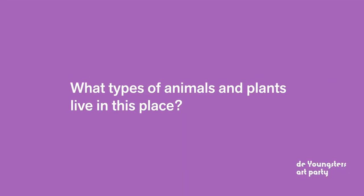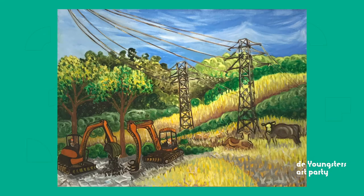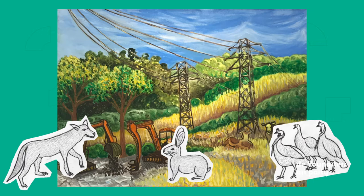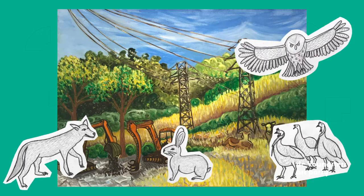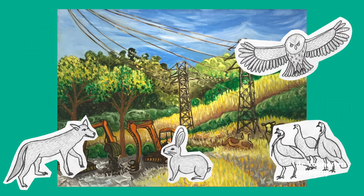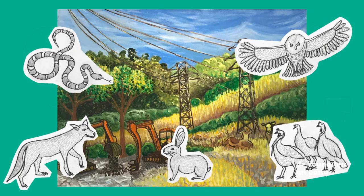What types of animals and plants live in this place? Well, there are cows. Are those wild animals? I know. I've spotted rabbits and turkeys, coyotes and owls on my hikes. And once I even saw a king snake climbing a tree.